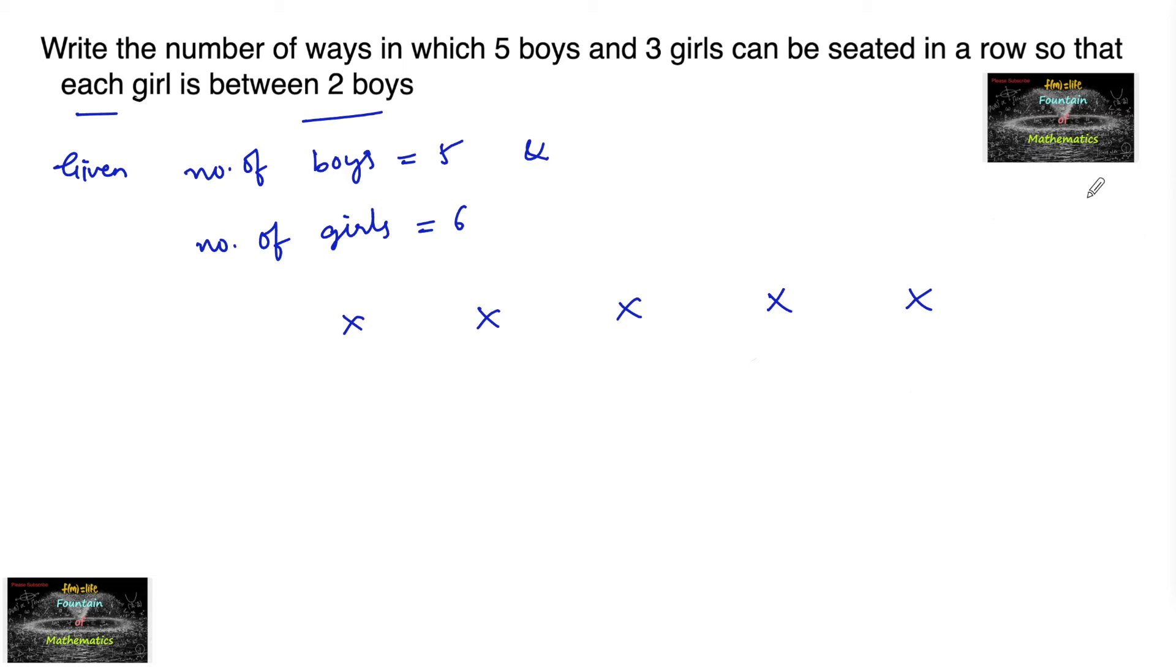Then we can find there are 6 gaps. So 1, 2, 3, 4, 5, and 6 gaps will be there. These are the positions of boys.